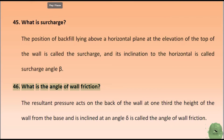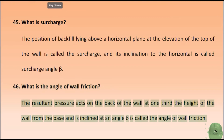What is the angle of wall friction? The resultant pressure acts on the back of the wall at one third the height of the wall from the base and is inclined at an angle δ called the angle of wall friction.